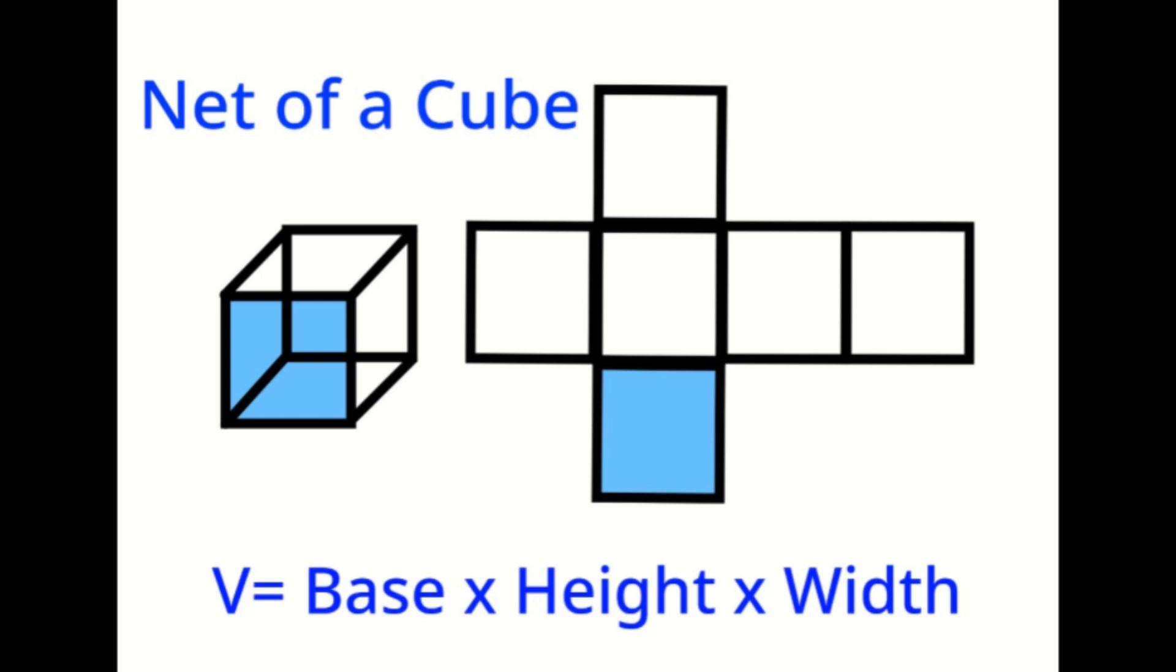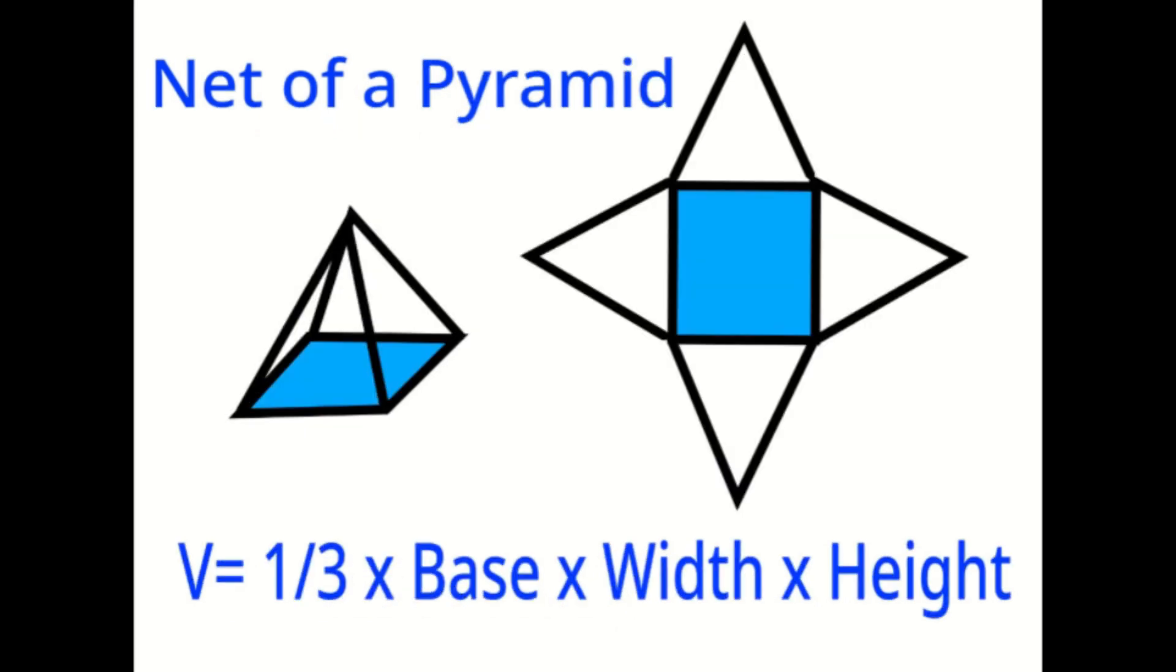For example, a net of a cube looks like this. A net of a pyramid looks like this.